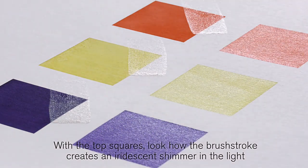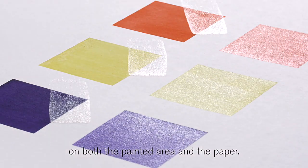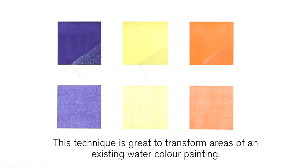look how the brush stroke creates an iridescent shimmer in the light on both the painted area and the paper. This technique is great to transform areas of an existing watercolor painting.